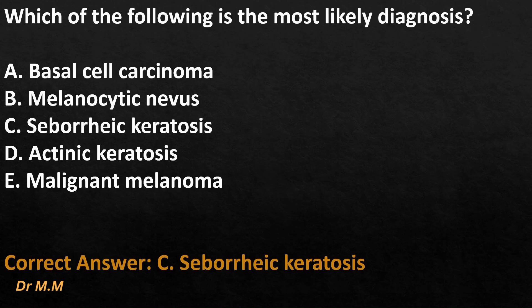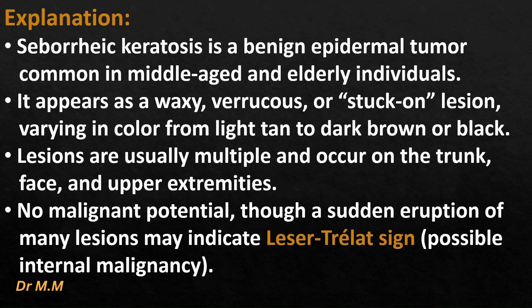According to our explanations, the correct answer is C, seborrheic keratosis. Explanation: seborrheic keratosis is a benign epidermal tumor common in middle-aged and elderly individuals. It appears as a waxy, verrucous, or stuck-on lesion varying in color from light tan to dark brown or black. Lesions are usually multiple and occur on the trunk, face, and upper extremities. There is no malignant potential, though a sudden eruption of many lesions may indicate the sign of Leser-Trélat, which may suggest a possible internal malignancy.